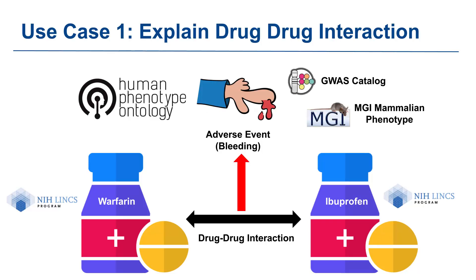Drug-drug interactions can lead to a variety of adverse events, including some that are serious or even life-threatening. For this tutorial, we chose the adverse event bleeding and the drugs warfarin and ibuprofen. Warfarin is known to interact with NSAIDs such as ibuprofen, and this interaction can increase the chance of bleeding. One way to identify potential drug-drug interactions is to look for overlapping genes between the genes that are regulated by the drugs and the genes that are associated with the adverse event.